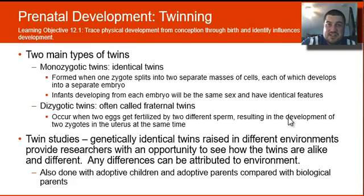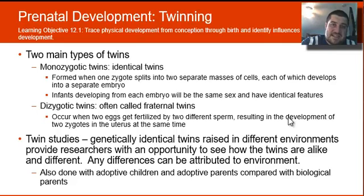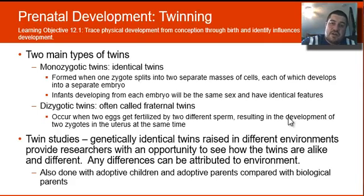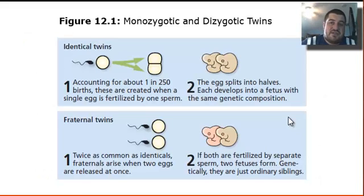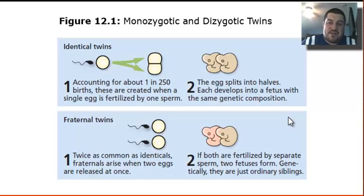Think of 'di' as in two eggs. Psychologists and developmental psychologists find identical twins very beneficial because they have the exact same heredity. If you can find a set of identical twins that were split at birth, you could compare differences between the two, and any difference would be attributable to the environment — the nurture side. You can also do this with adoptive children compared with their biological parents, where most differences would be attributable to environment. Here's a figure of monozygotic twins on top and dizygotic twins on the bottom.